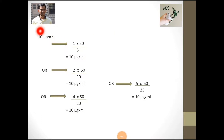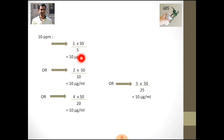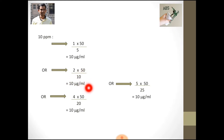To make a 10 ppm solution from the 50 ppm stock solution: pipette 1 ml and dilute to 5 ml, giving 10 micrograms per ml. Since a 5 ml volumetric flask is hard to get, alternatively pipette 2 ml and dilute to 10 ml, or pipette 4 ml and dilute to 20 ml — both also give 10 micrograms per ml.